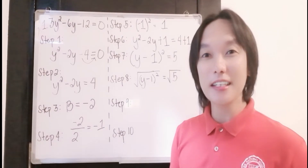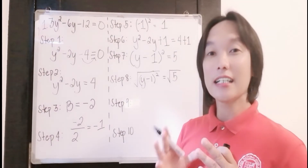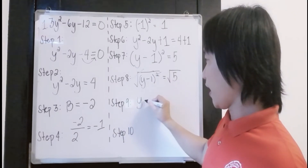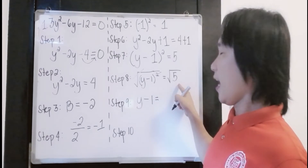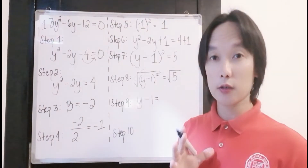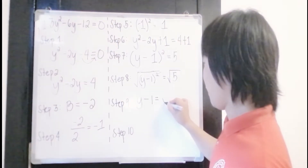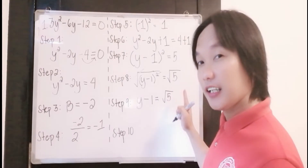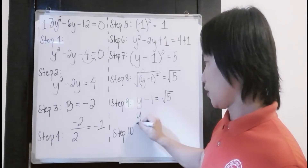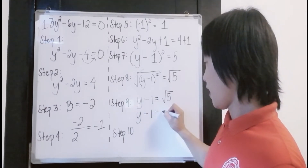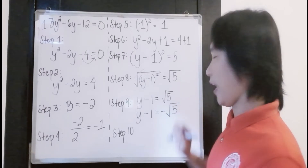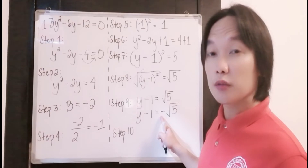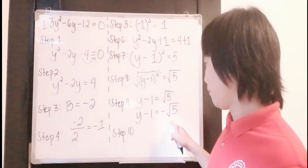Step number 9 is to simplify our equation from step number 8. Removing the radical symbol and the exponent 2 gives us y minus 1. Take note: since 5 is not a perfect square, we simply copy the square root of 5. But take note, it is not only the positive square root of 5 — you will also get a negative square root of 5. Be careful in writing the negative symbol: the negative should be outside the radical symbol, not inside.